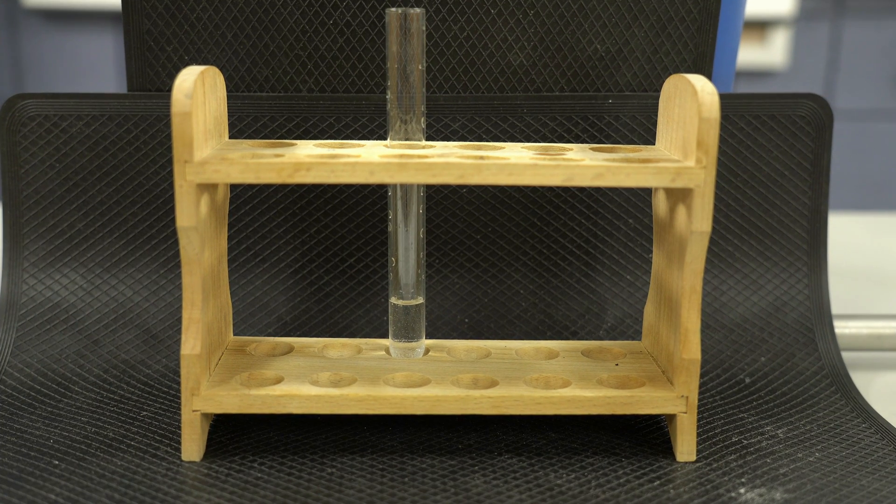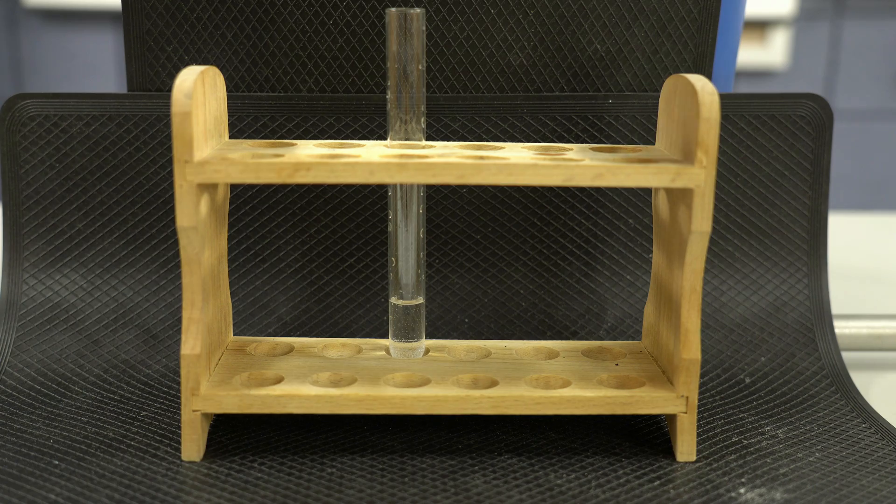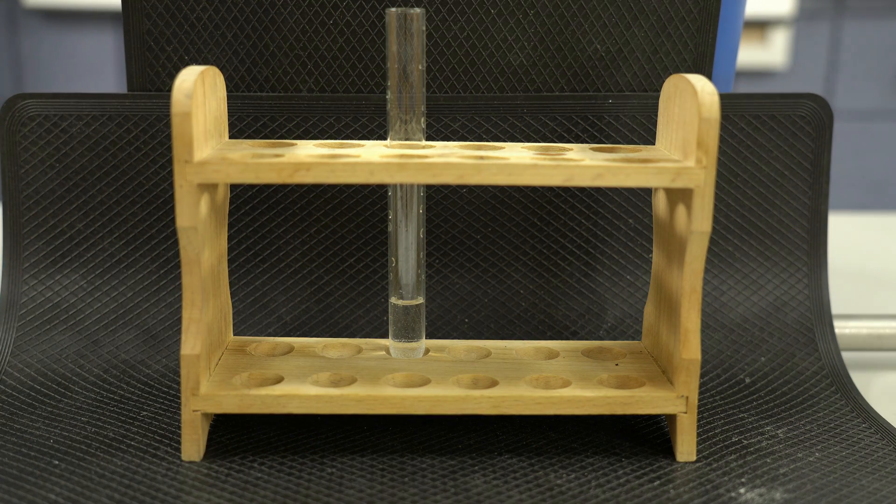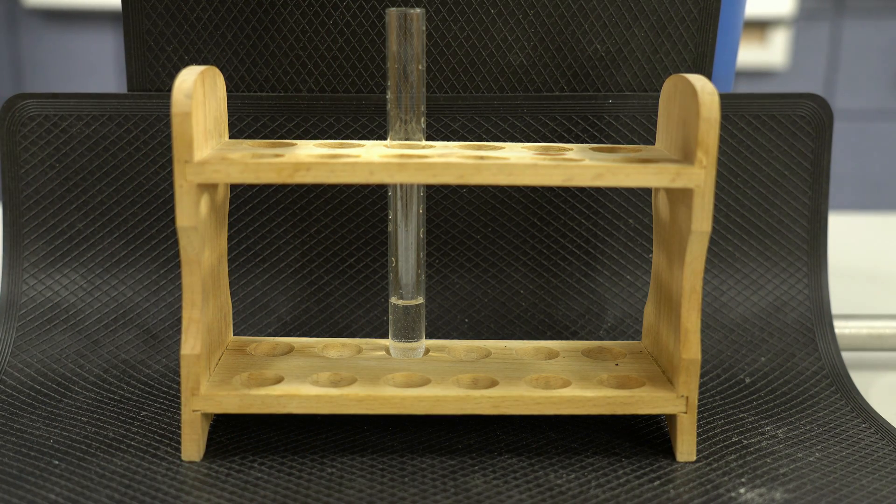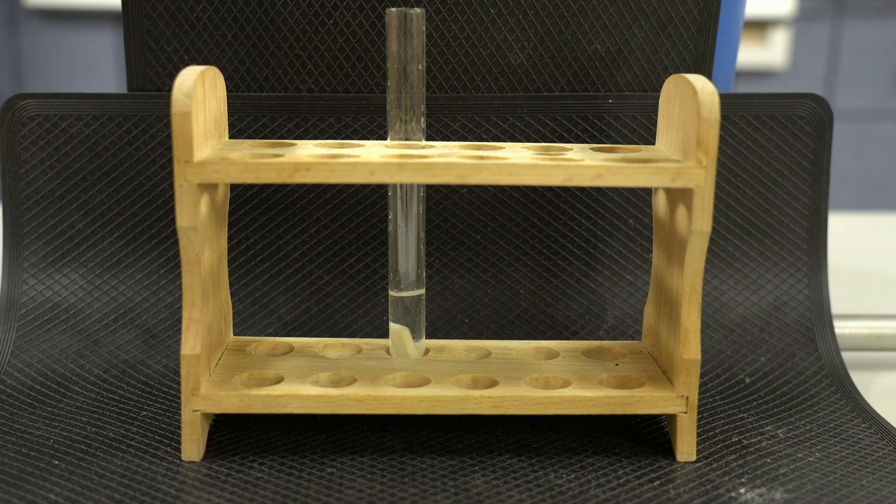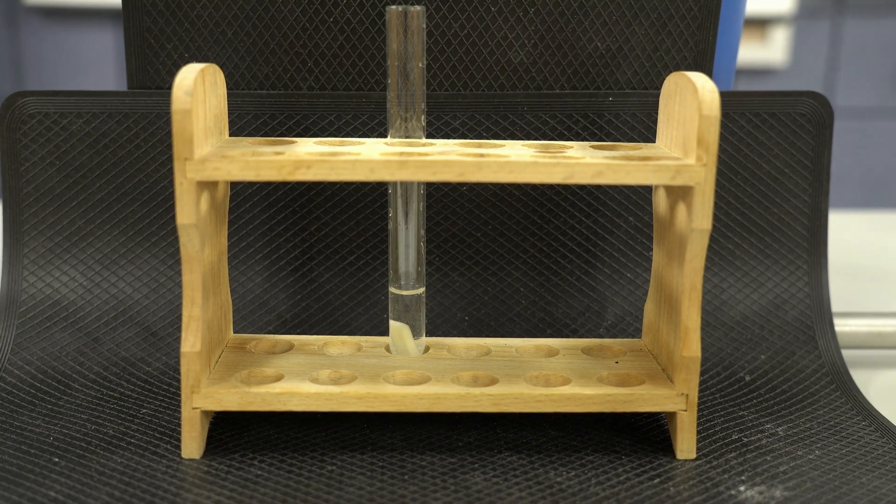Here we're going to observe a normal catalase reaction. I've cut a piece of potato and we're going to add that to the test tube. I've got 4 mL of hydrogen peroxide located right there. I'm going to drop that in and let's observe what happens.